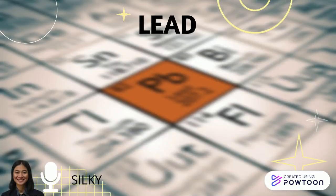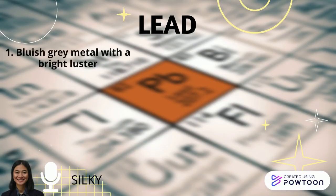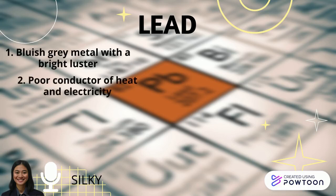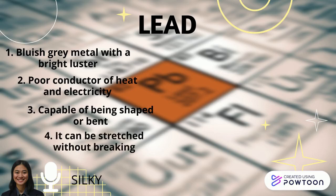Next will be lead. The physical properties: it is a bluish-gray metal with a bright luster, is a poor conductor of heat and electricity, and is capable of being shaped or bent but cannot be stretched without breaking.